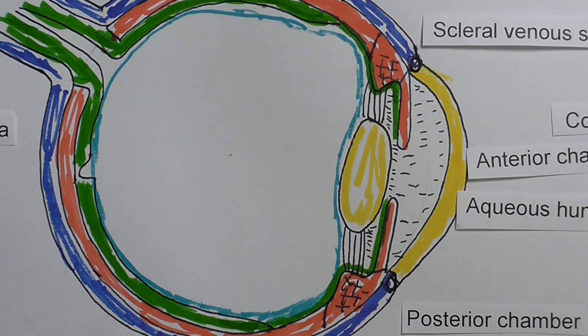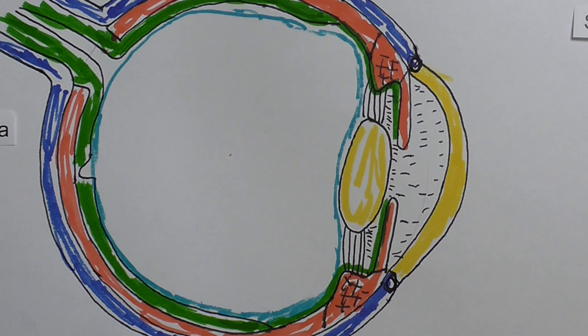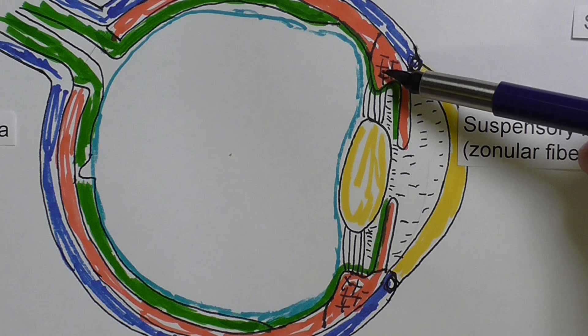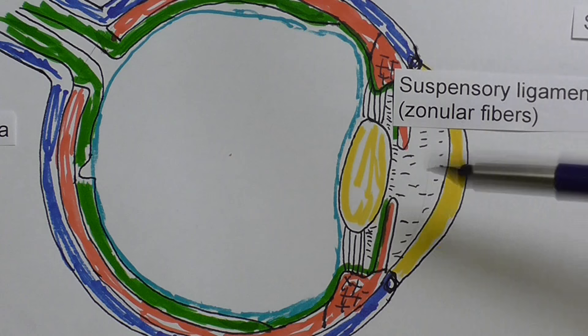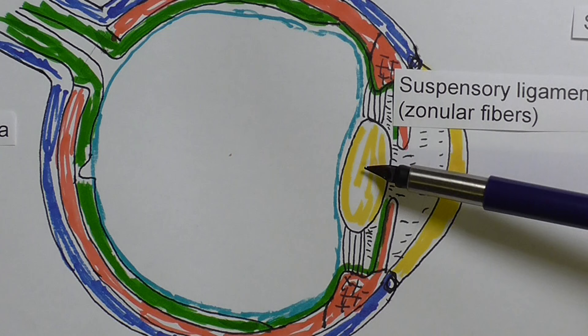The ligaments supporting the lens — between the ciliary body with the ciliary muscles and the lens — are called the suspensory ligaments. To be precise, these are the suspensory ligaments here and here, and they're made up of what's called the zonular fibers. They are the suspensory ligaments because they are suspending the lens.